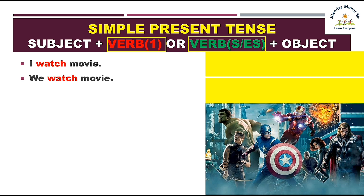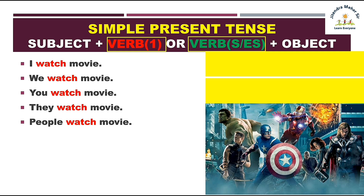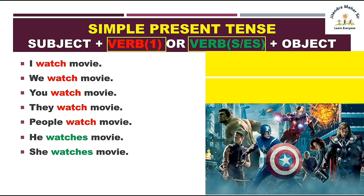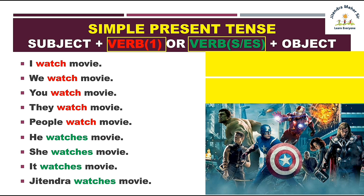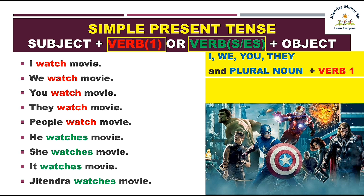Examples: I watch movie, we watch movie, you watch movie, they watch movie, people watch movie — but he watches movie, she watches movie, it watches movie, Jitendra watches movie. So this is the key point: the subject change will change the verb form. With I, will, you, they, and plural nouns — we write the verb's first form.